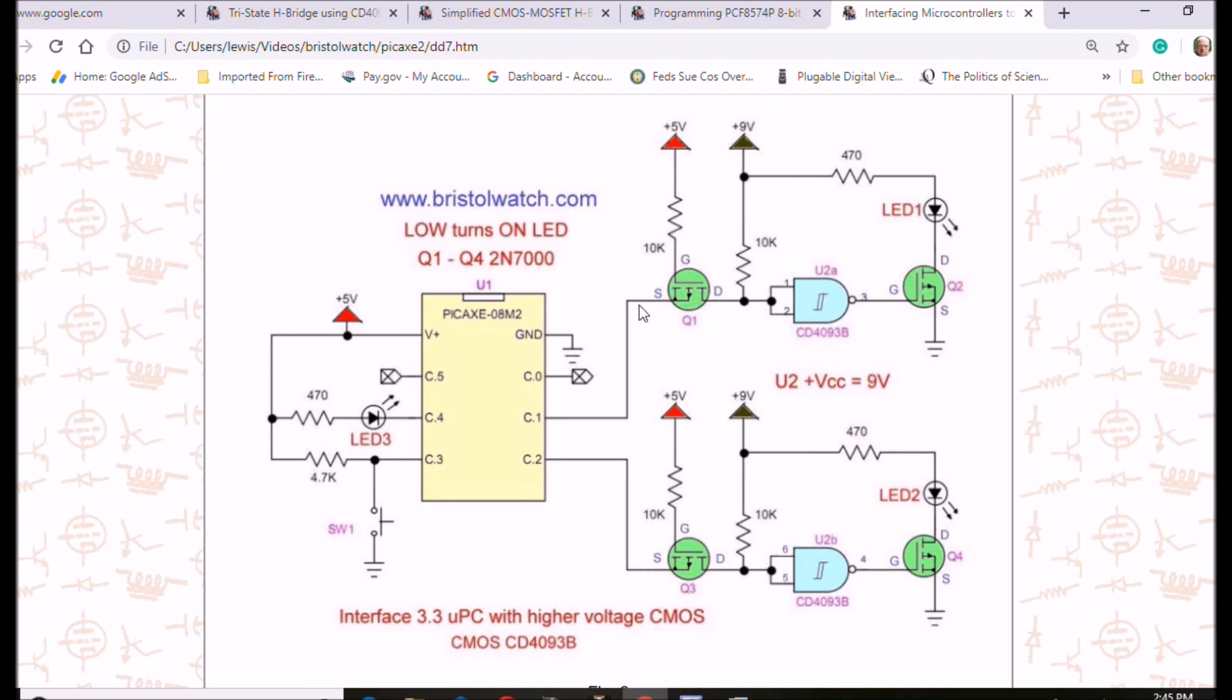Again, a high in is going to be a high out. High on source will be a high on the drain, inverted to a low. Q2 will turn off. A low in on the source will be a low out on the drain, which is inverted to a high. Switches on Q2, lights up LED one, and it switches back and forth.